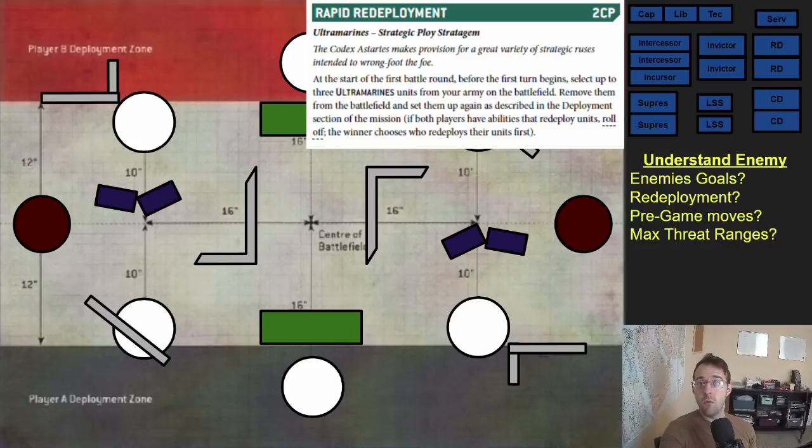For example the ultramarines have a 2 CP stratagem called rapid redeployment which allows them to pick up three different units on the battlefield, remove them, and then redeploy them. This is incredibly powerful when you pair them with something like an invictor tactical warsuit which is able to forward deploy. The warsuits could be put in an incredibly aggressive position and then if the ultramarine player goes second just picks him up and puts him right back into his backfield. The next is any pregame moves. Necrons have an ability to do an entire army wide 6 inch pregame move. You want to look at the most important pieces of your opponent's army and ask what their max threat ranges are.